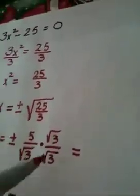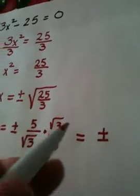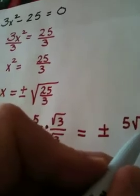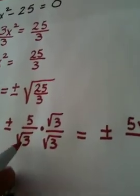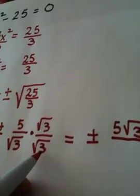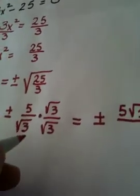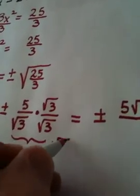So we end up getting plus or minus, on top, 5 root 3 is simply 5 root 3. Nothing great going on there. On the bottom, the square root of 3 times the square root of 3 actually becomes the square root of 9, however that is 3.